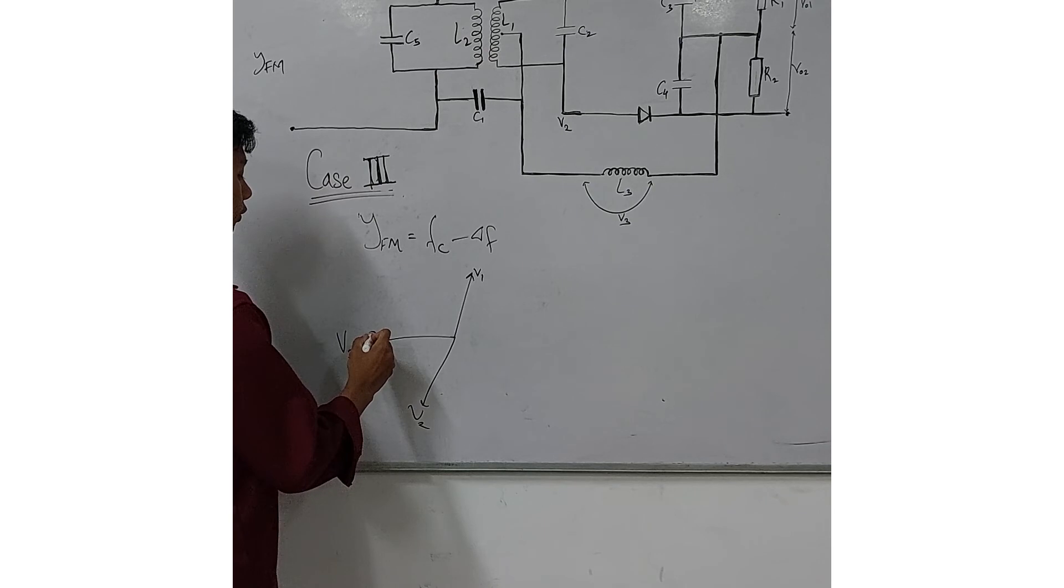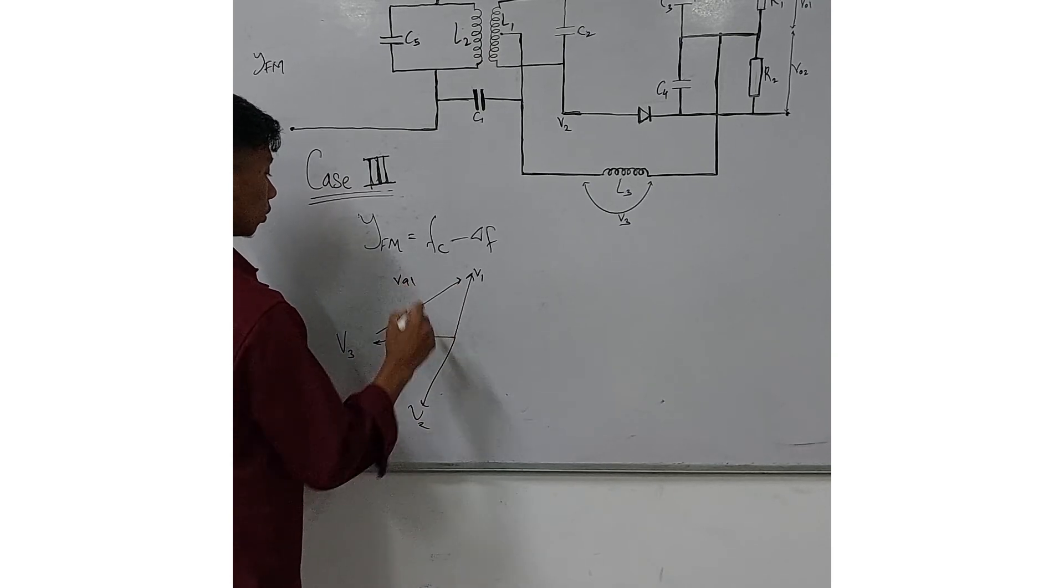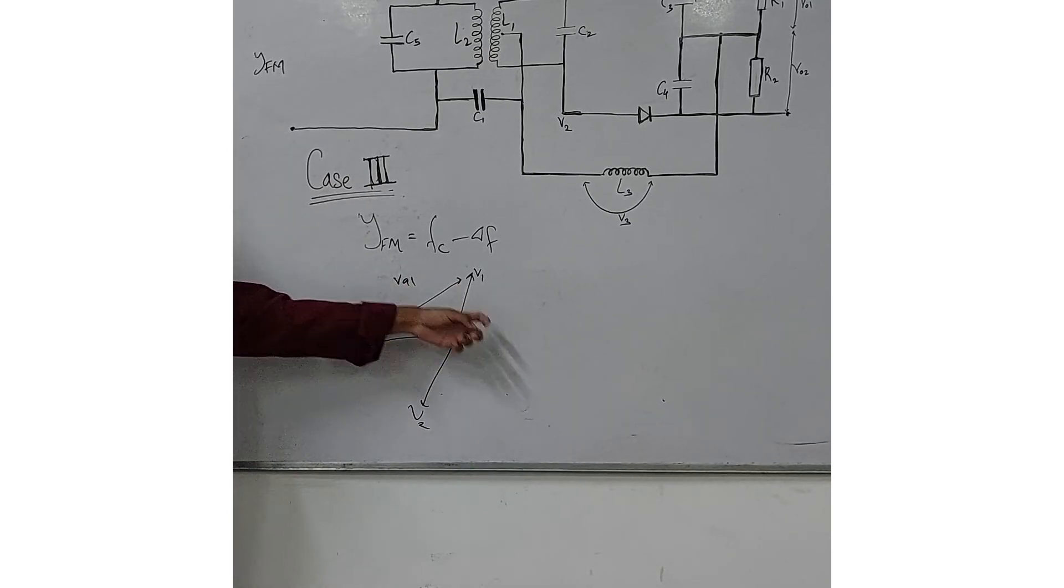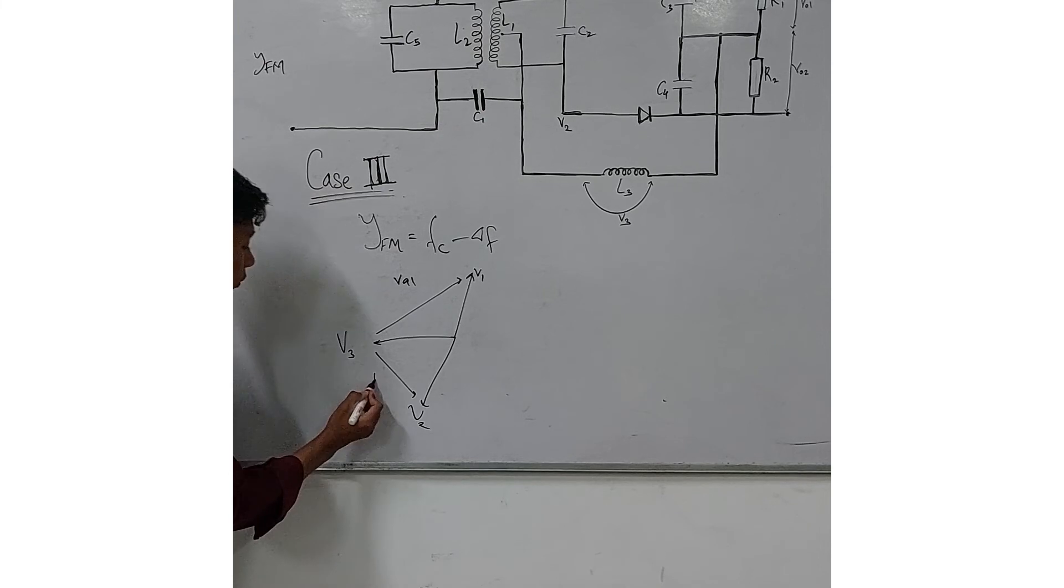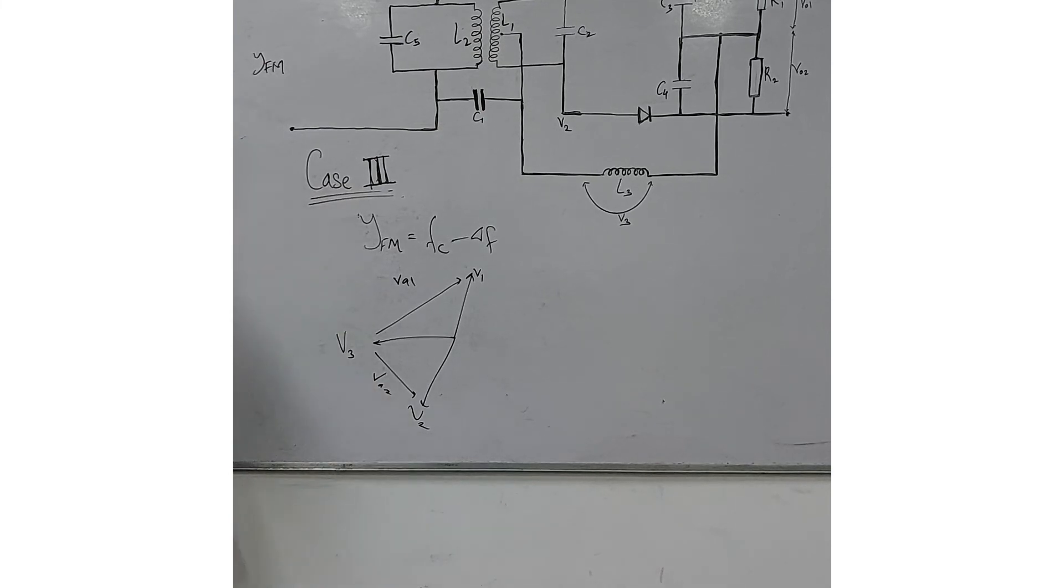Now to obtain the phasor VA1, we take the resultant between V3 and V1. Similarly, to obtain VA2, we take the resultant between V3 and V2.